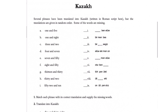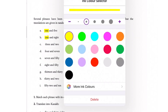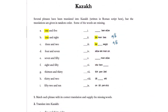Firstly, match each phrase with its correct translation and supply the missing words. With any question that involves matching, we need to look for repetitions. On the screen we can see quite a few: ones, fifties, four, five, eight — and one definitely stands out. So we are going to try to figure out what 'one' is. Looking through the left side and the right side, we can see that 'one' is highlighted in yellow on both sides.